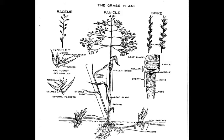A panicle means that the spikelets sit on pedicels, or smaller stems that come from the main axis. And a spike means that each spikelet is attached directly to the main stem.